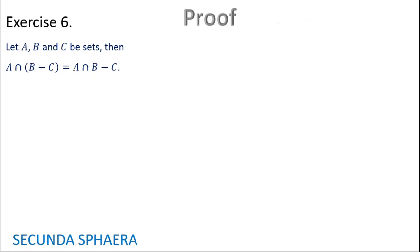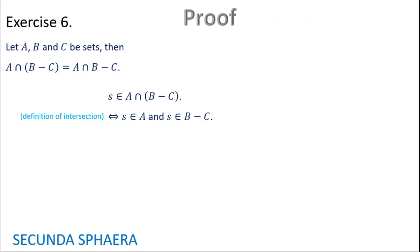It is required to prove an equality of sets, so it will be proven by equivalences. Starting: S in A intersection (B without C). By the definition of intersection, this is if and only if S is in A and S is in (B without C). Now using the definition of difference of sets, it gives S is in A and (S is in B and S is not in C).